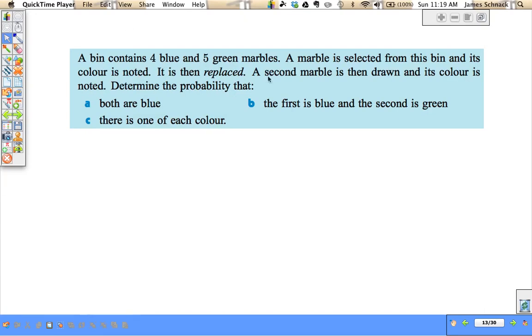We have a bin with blue and green marbles. One thing about probability is you always see lots of marbles in bins, or when I was in college, we talked about urns, which are large vessels, and we have these marbles inside. It's a very easy way to illustrate probability. So we're going to select a marble from this bin and note its color, then replace it. Second marble is drawn and its color is noted.